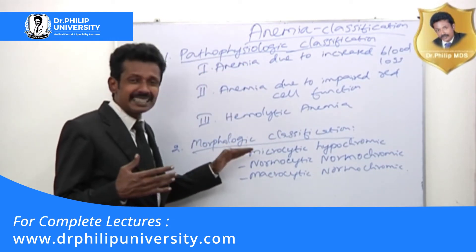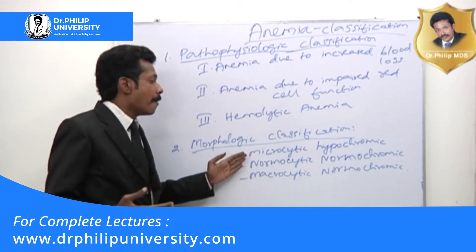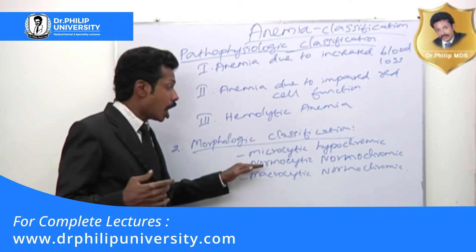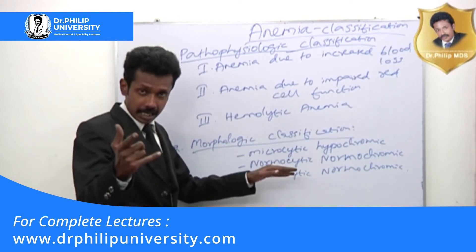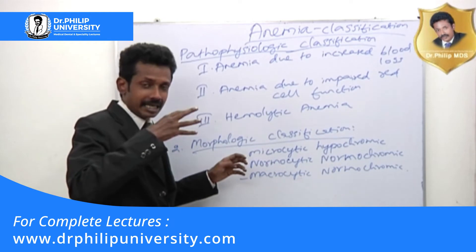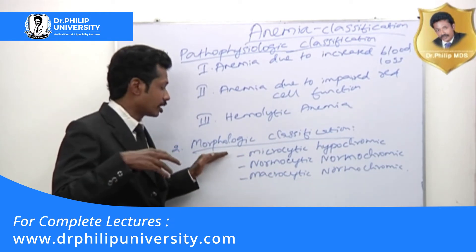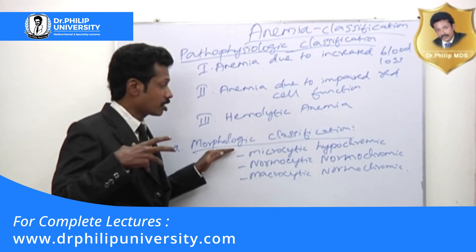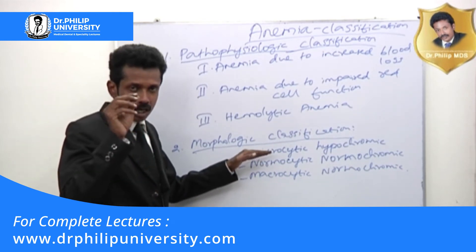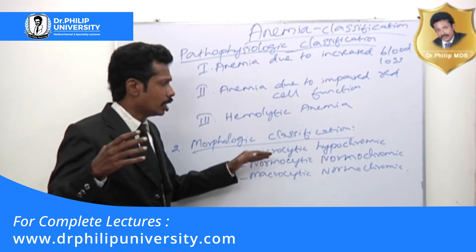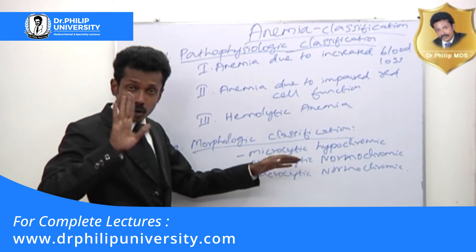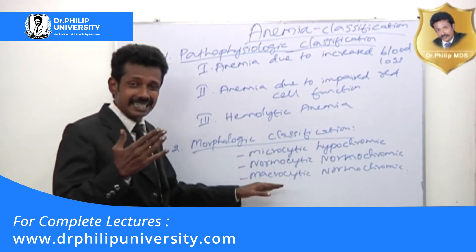Now coming to the morphology classification of anemia, we have three classic types. They are microcytic hypochromic anemia, normocytic normochromic anemia, and macrocytic normochromic anemia. Depending upon the morphological analysis of the blood cells, micro means small and chroma means color. So the three morphology types are microcytic hypochromic anemia, normocytic normochromic anemia, and macrocytic normochromic anemia.